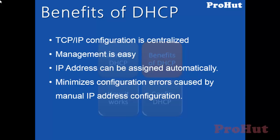DHCP minimizes configuration errors caused by manual IP address configuration. For example, if you are assigning IP addresses manually, you need to remember all the IP addresses you have used, as you cannot assign the same IP address to another computer — doing so will result in an IP conflict error message. In the case of DHCP server, you don't need to remember or worry about IP conflict scenarios.